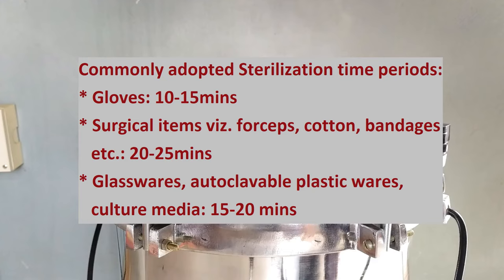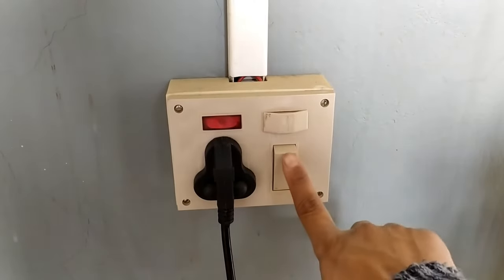Sterilization time periods usually adopted for common items are as follows: for gloves, 10 to 15 minutes; for surgical items such as forceps, cotton, and bandages, 20 to 25 minutes; and for glassware, autoclavable plastic wares, and culture media, 15 to 20 minutes is a generally accepted sterilization time.